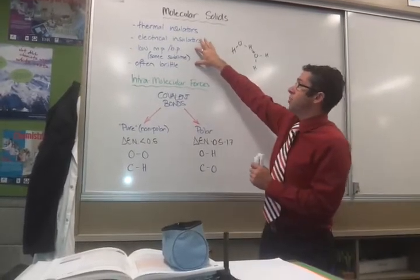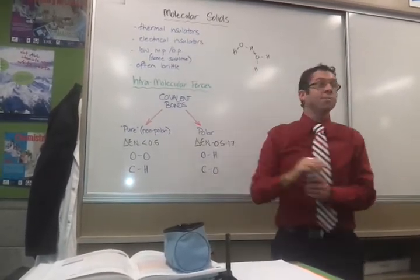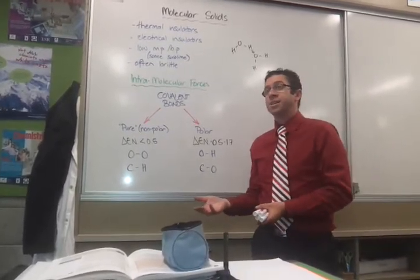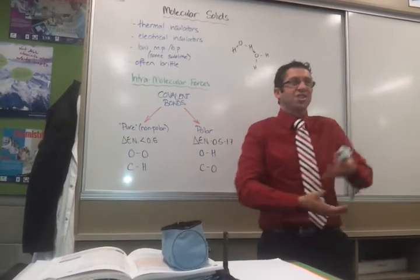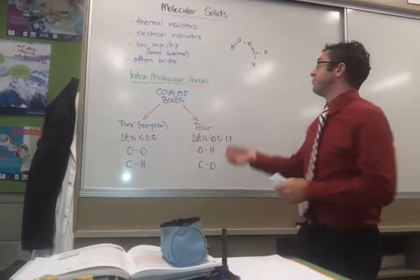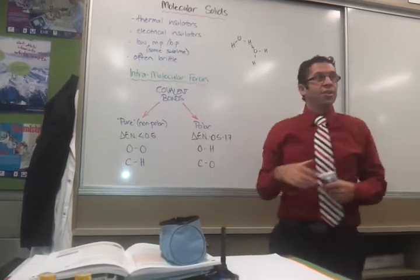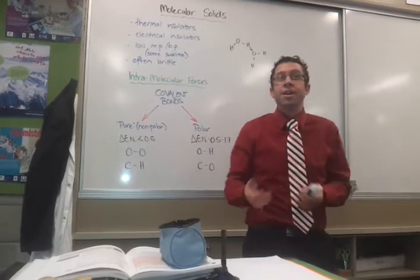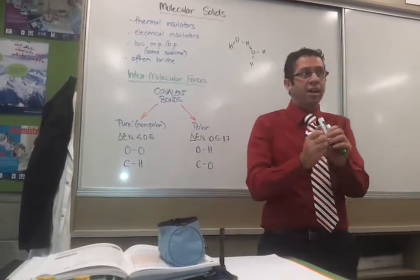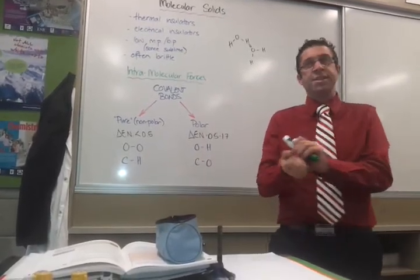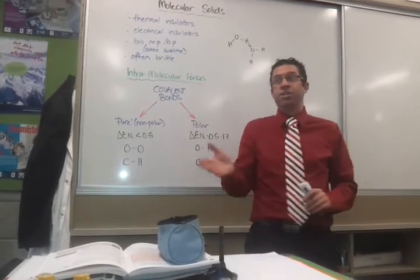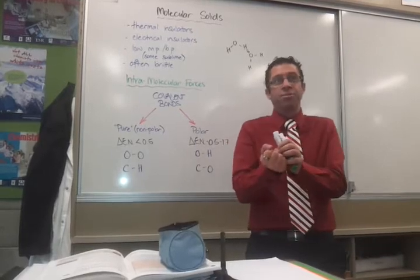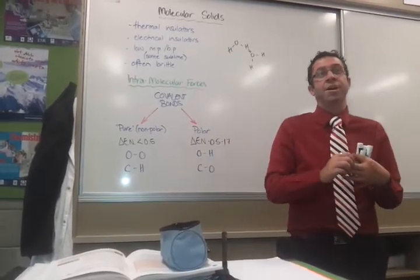They have low melting points and boiling points, and some of them even sublime. Things like dry ice and iodine don't turn into a liquid state. If you give them energy, they actually turn straight into a gas state without being liquid first. And they're often brittle. If you think of ice, if you think of dry ice, if you think of sulfur, if you think of sugar, they're actually quite brittle. They're relatively hard, but brittle things. They're not as hard as the ionic solids, and definitely not as hard as your covalent networks, but they're normally hard and brittle. Again, it's because of the forces between the particles.